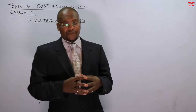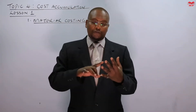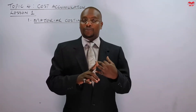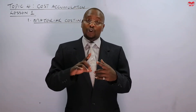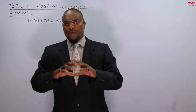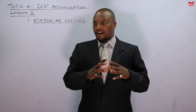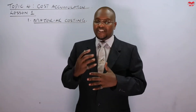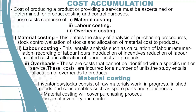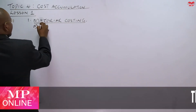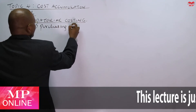We can talk of different types of inventories: raw materials, work in progress — which are materials that have been processed but not to the final stage — finished products, and consumables like stationeries. We want to see the procedures involved in this process. Material costing will cover purchasing procedures, receipts and storage, issue of inventory, and control.